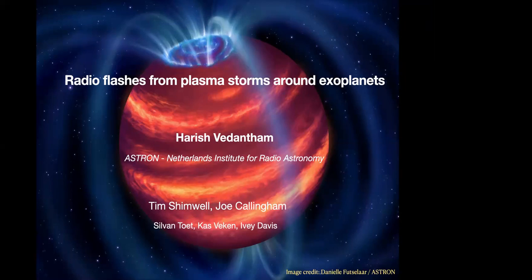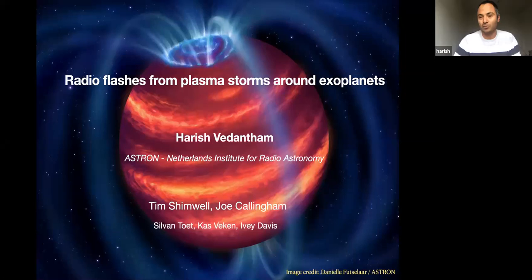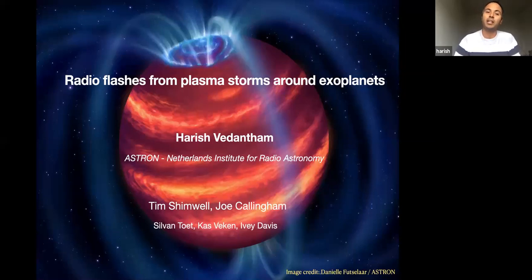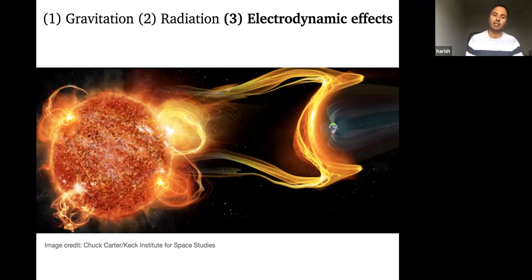I want to talk mainly about extrasolar systems, but I'll draw from our own solar system because that's the system we've studied best. I'm mainly talking about radio emission — not the fantastic work in optical, X-ray, or infrared bands. I want to start by broadly framing what radio astronomy can do in these systems. If you imagine a stellar system with a star and some planets, the two are interacting.